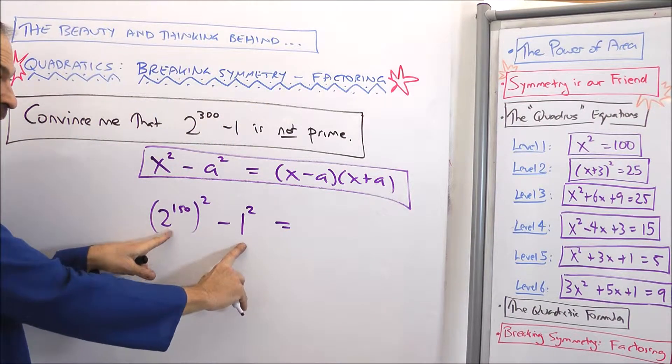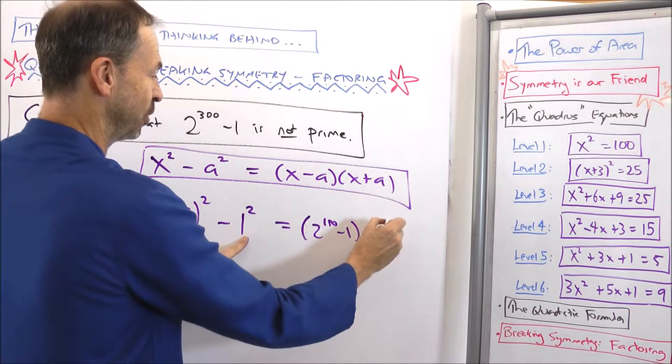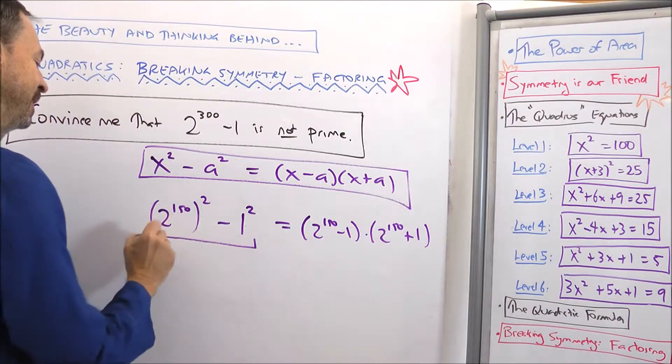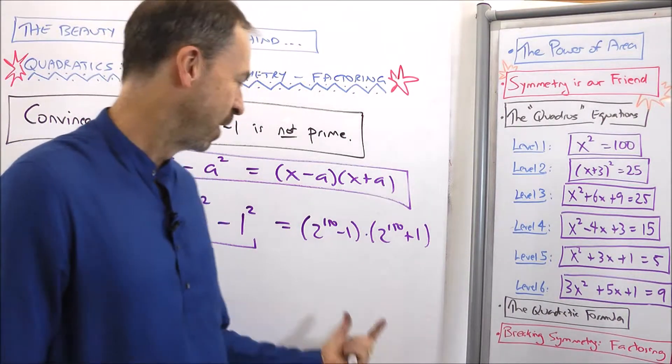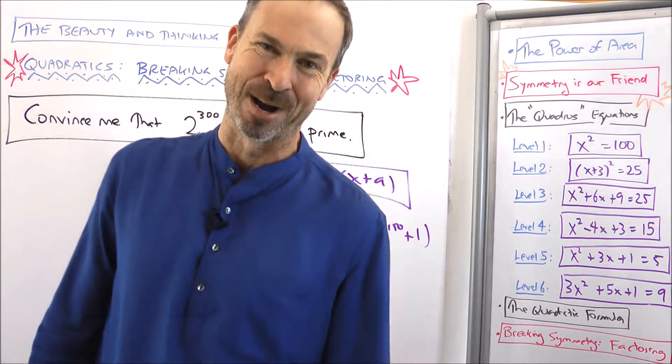So if I just literally copy our algebra formula for these particular numbers, x is 2^150, a is 1, then I get this as (2^150 - 1)(2^150 + 1), which means this number, this number 2^300 - 1 factors is the product of two other numbers. Therefore, it's not prime.